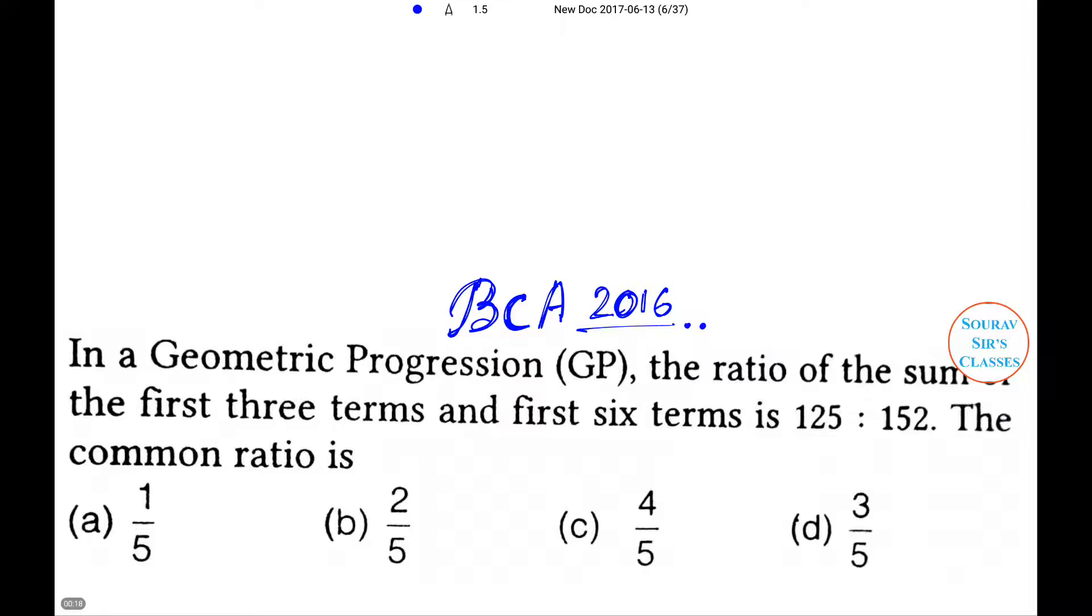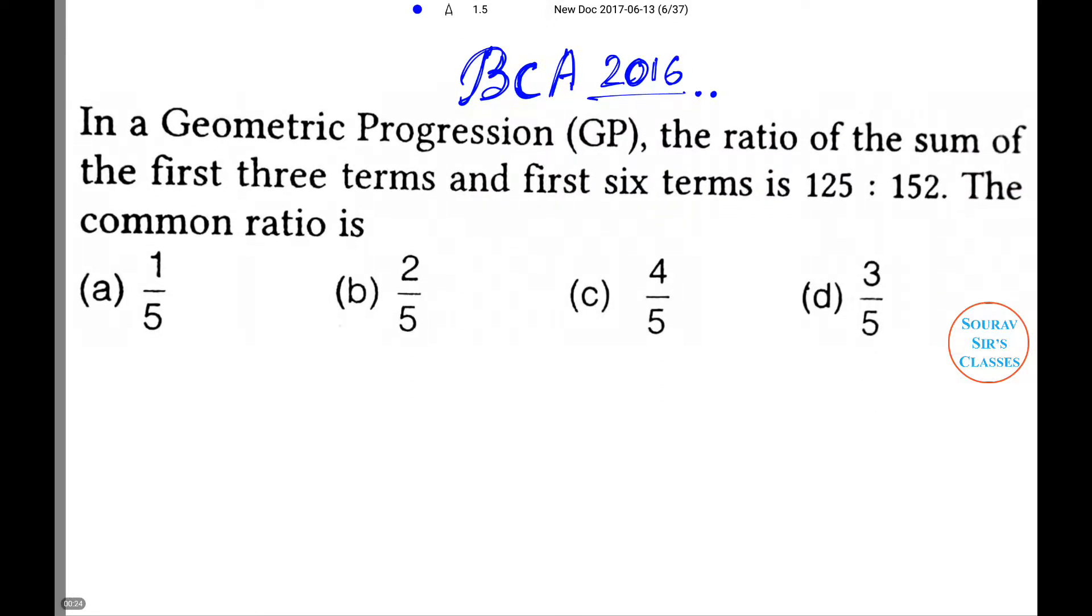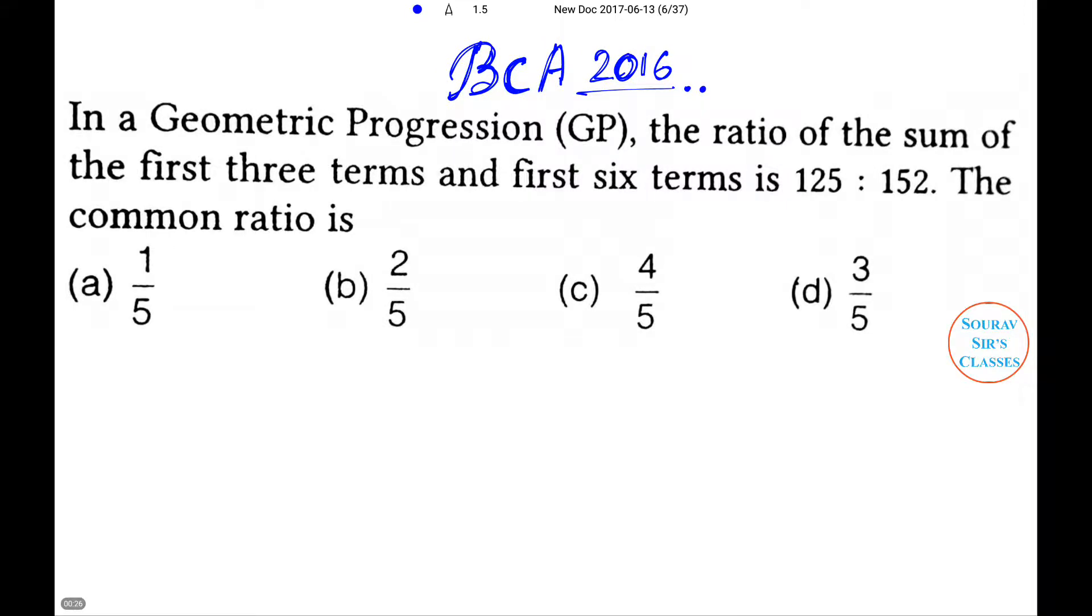Here's the problem. In a Geometric Progression (GP), the ratio of sum of the first three terms and the first six terms is 125 to 152. The common ratio is: Here are the four options: one by five, two by five, four by five, and three by five.